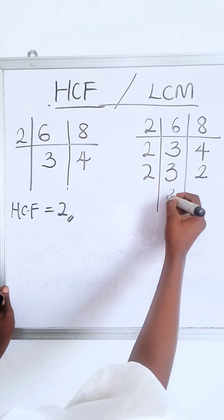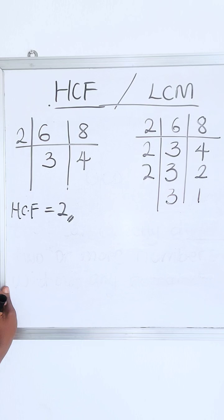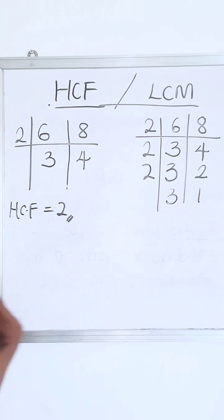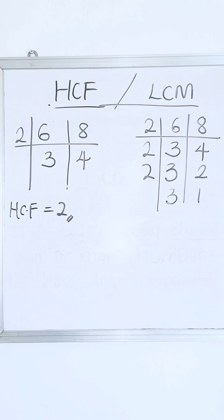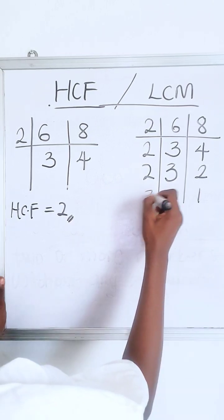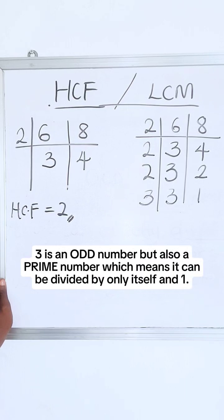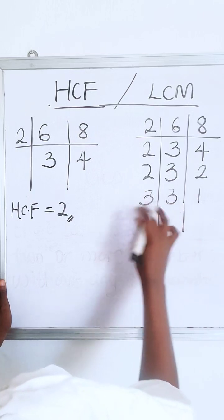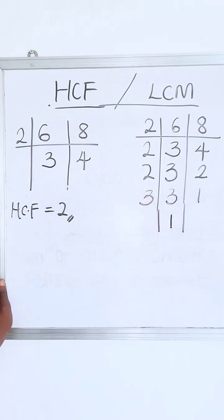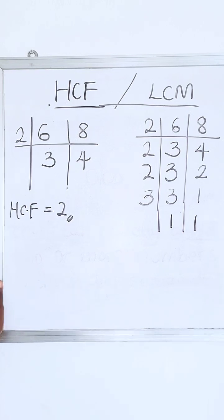Three has a remainder, so just write it. Then two in two is one. Now that we're done with anything two, we can move to three. Three can go in itself without any remainder because it's a prime number, so only three can go in itself without a remainder. Three and three is one, and three and one is impossible, so you just write one again.